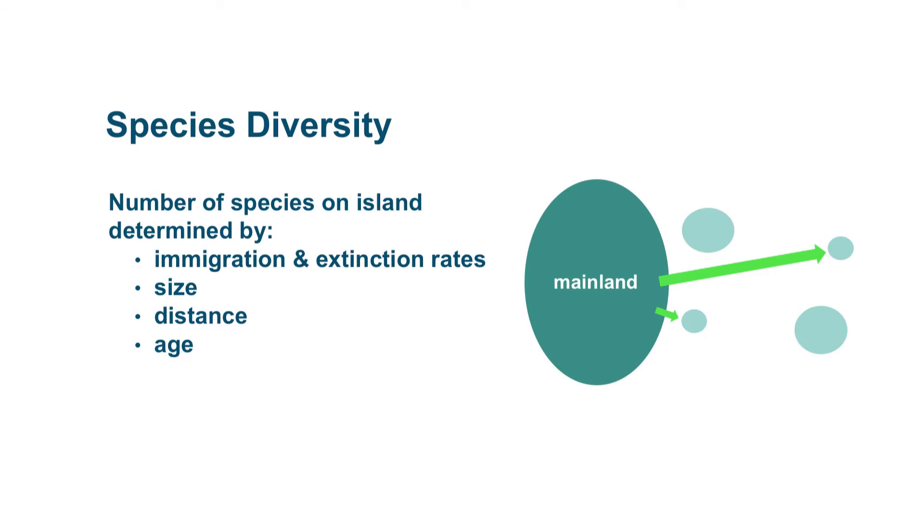The species diversity on an island is the number of species on the island. This is determined by several things: immigration and extinction rates, the size, the distance, and the age of the island.